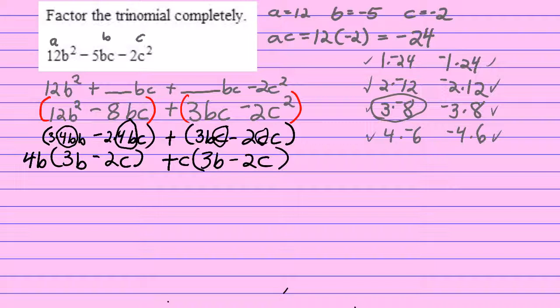Now notice that the 3b minus 2c matches in each set of parentheses. I have 3b minus 2c, 3b minus 2c. Now it is the greatest common factor of the entire polynomial, so I'll write it down. And then I'll write the leftovers. What are the leftovers? There's a 4b and a plus and a c. So 4b plus c.